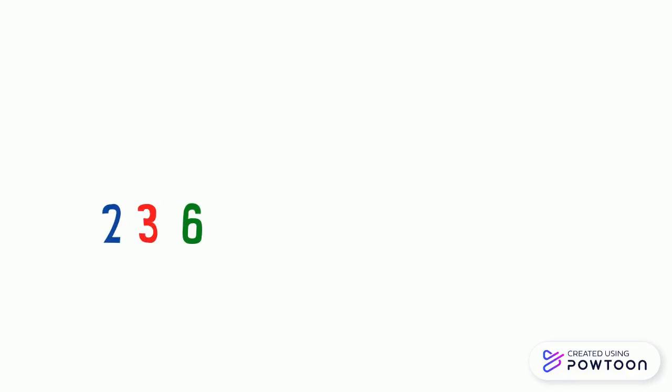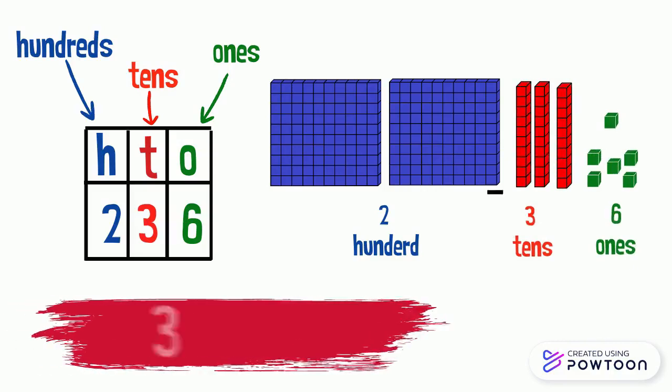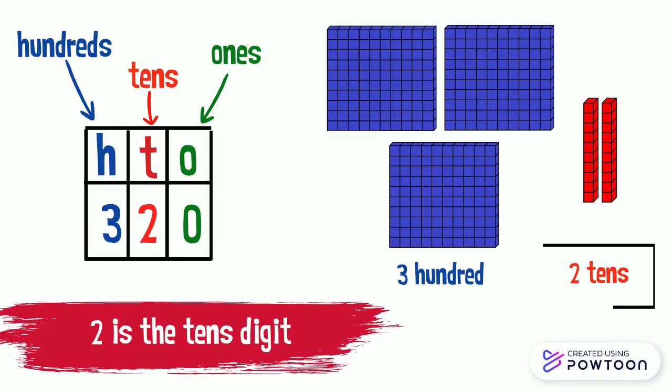To find the tens digit in a number, we should look at the tens place. In the number 236, 3 is the tens digit. In the number 320, 2 is the tens digit.